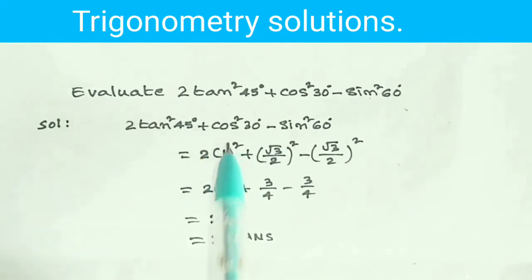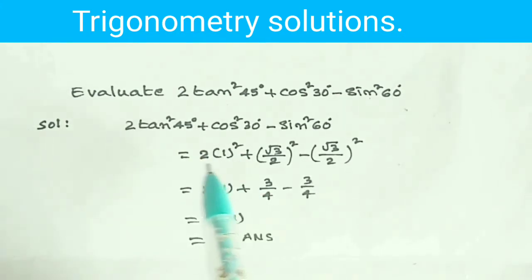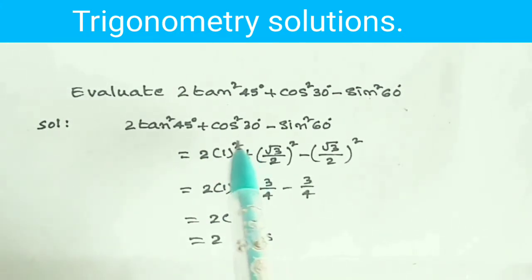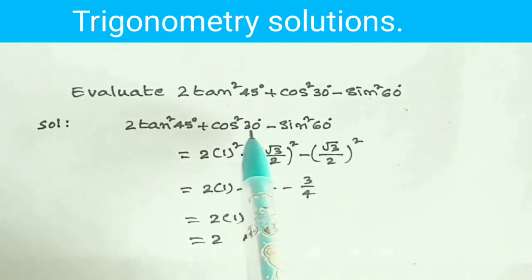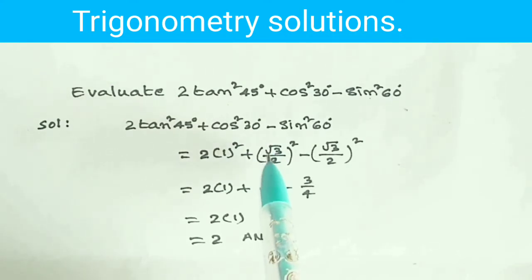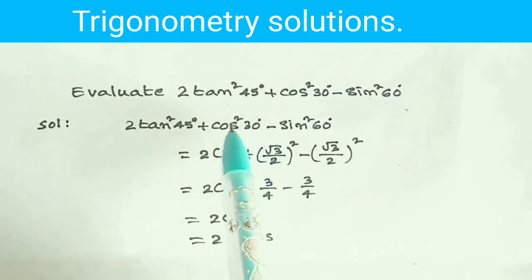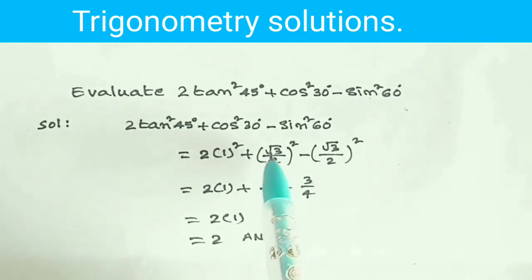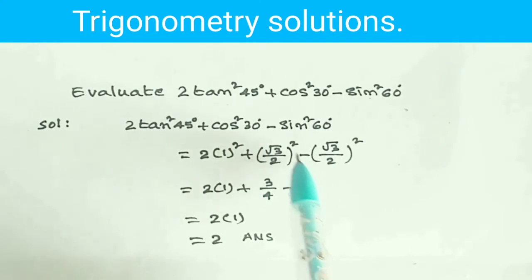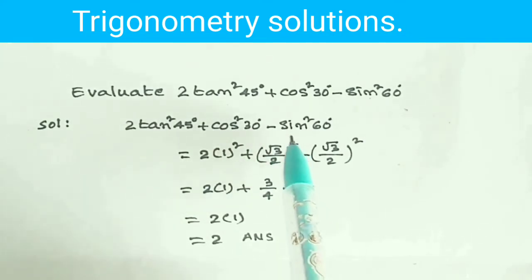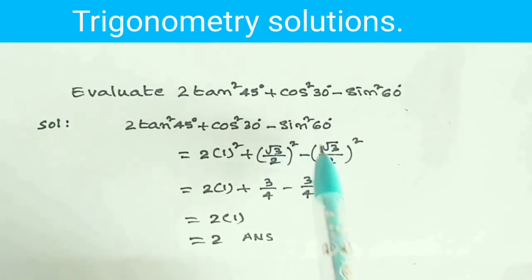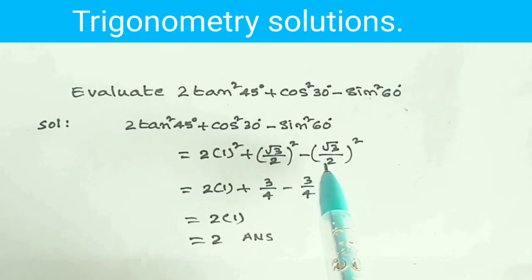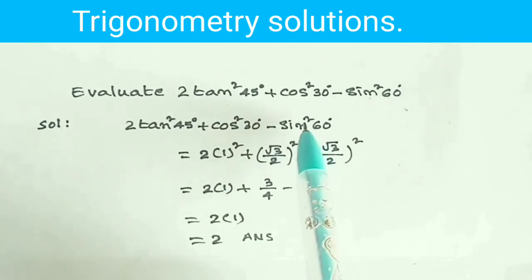cos 30 degrees is equal to root 3 by 2, sin 60 degrees is equal to root 3 by 2. So the expression becomes 2 times 1 squared plus root 3 by 2 squared minus root 3 by 2 squared.